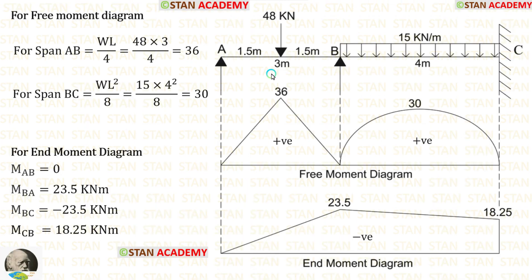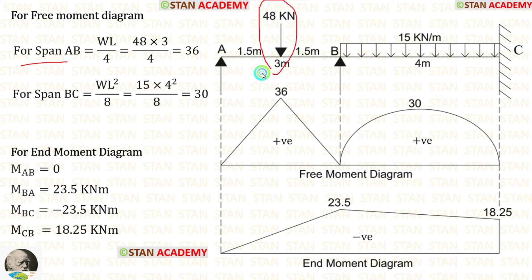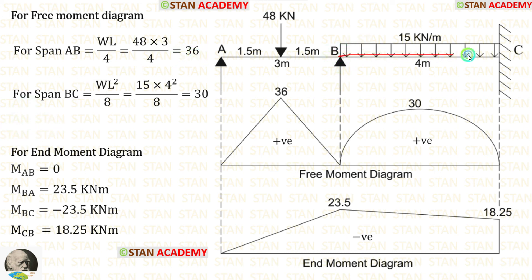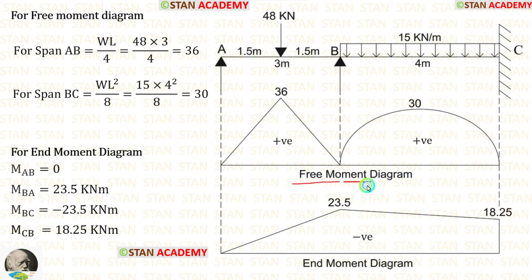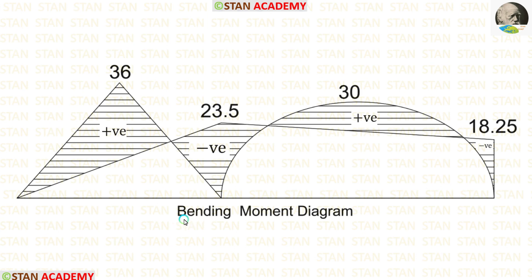Now we are going to make the bending moment diagram. Before making the bending moment diagram, let us make the free moment diagram and the end moment diagram. For the free moment diagram, we assume every span as a separate simply supported beam. In span AB with a point load at the center, the maximum bending moment is WL/4, giving 36. In span BC with a UDL for the full span, the maximum bending moment is WL²/8, giving 30. Using the end moments, we make the end moment diagram, then combine the free and end moment diagrams to get the bending moment diagram.